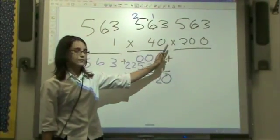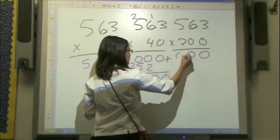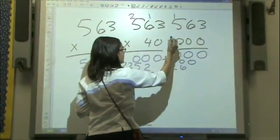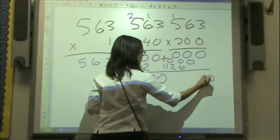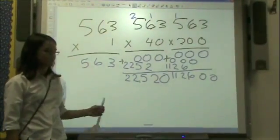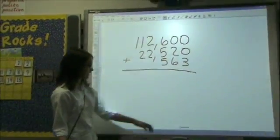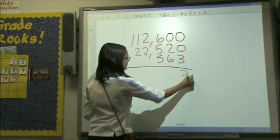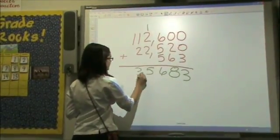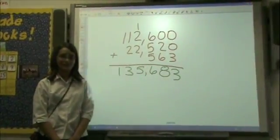Then you take the 2 from 241, which is in the hundreds place, so it's 200, and you multiply that by 563 and you get 112,600. Then you just add these three numbers together — and the answer is 135,683.